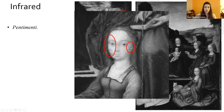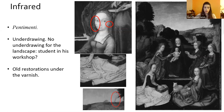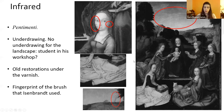We also discovered that Isenbrant used an underdrawing — here is a beautiful example in the red dress of Saint Ursula. However, there is no underdrawing for the landscape, so perhaps it was done by a student in the workshop. We also found old restorations under the varnish, and the fingerprint of the brush that Isenbrant used in the upper part of the painting.